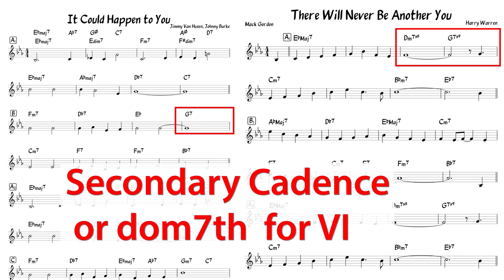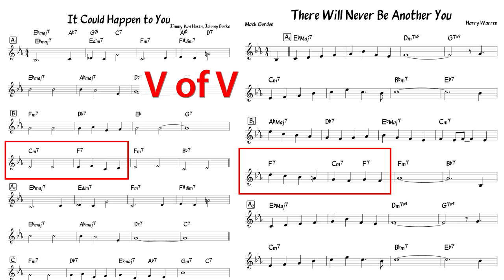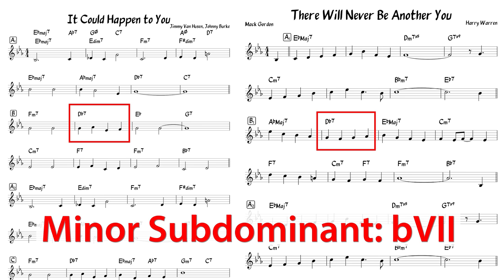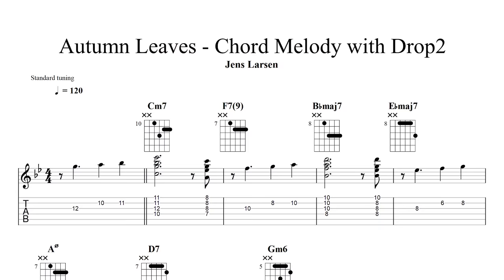This is really useful for understanding what's going on in a song, and it also gives you the ability to take what you learn from one song to another where you come across the same type of cadence in a different key. You'll have an idea of what it sounds like and what to play over it, making it a lot easier to learn more songs and become a more skilled improviser. The next exercise will help you generalize the information you learn when you analyze a song, and also help you solve problems with harmonizing, reharmonizing, and making chord-melody arrangements.